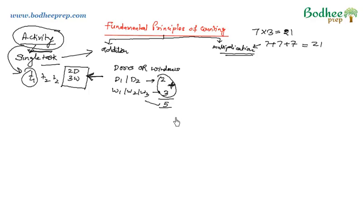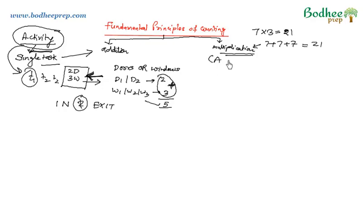Now let me modify this question where we have to use the multiplication rule. In the same question, if I ask: in how many ways can a thief enter into the shop and exit the shop? Now the activity is to get inside the shop and exit it. If the thief just gets inside and stays there, the task has not been completed because he has to leave the shop as well. So this activity comprises two tasks — one is to get inside, and the other is to exit. Whenever the term 'and' comes, we use multiplication; whenever 'or' comes, we use addition.